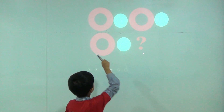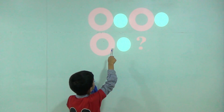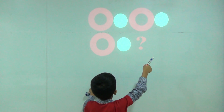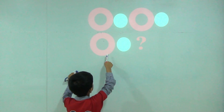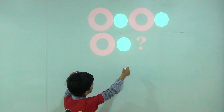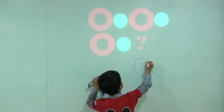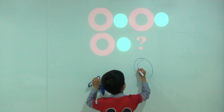Red ring, blue circle, red ring, blue circle, red ring, blue circle. So here would be red ring.